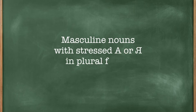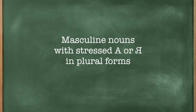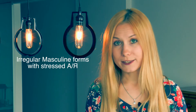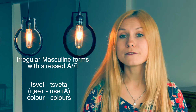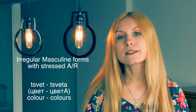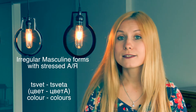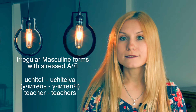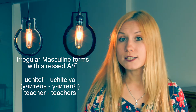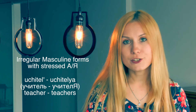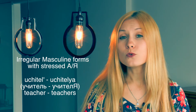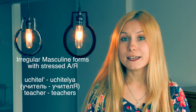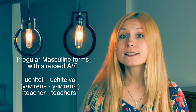We have some masculine nouns with stressed А or Я in plural forms. Let's have a look at them. Цвет — color. Цвета — colors. Учитель — a teacher. Учителя — teachers.